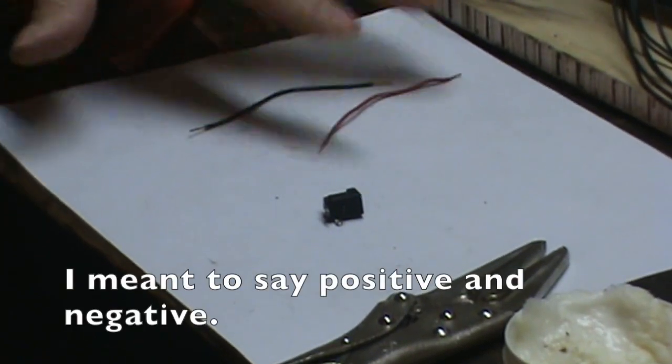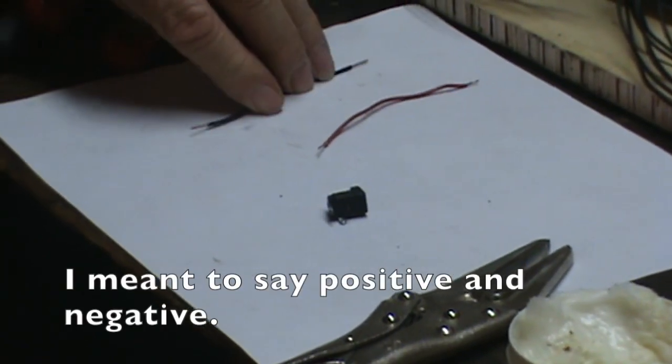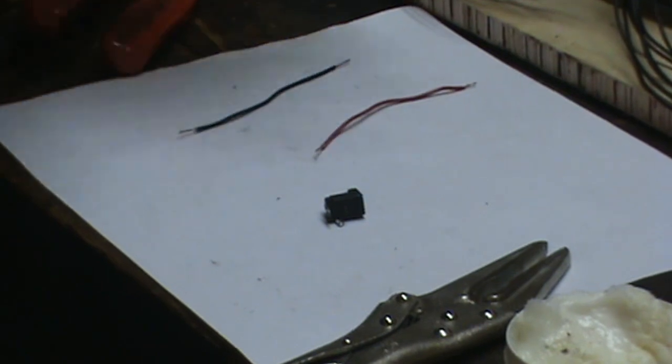I'm going to call the red one the hot one and the black one the ground. On DC you have that.